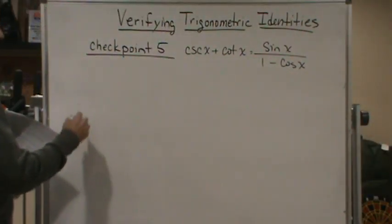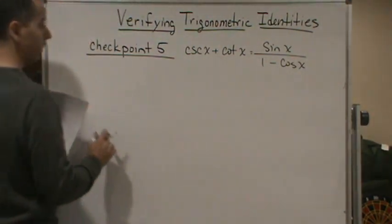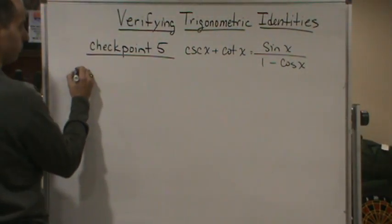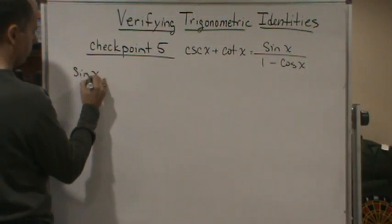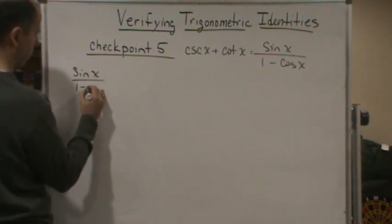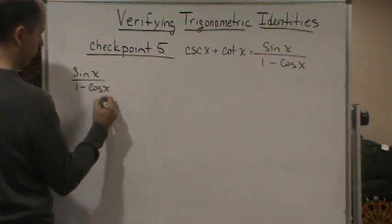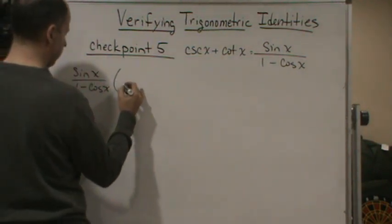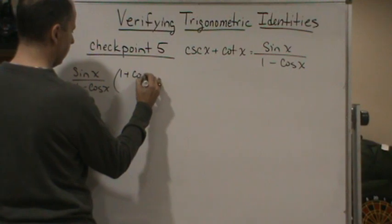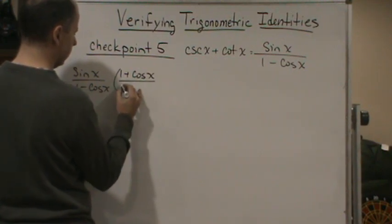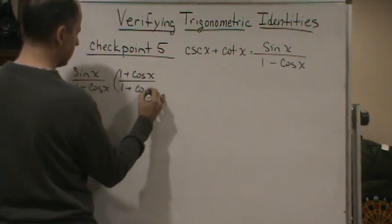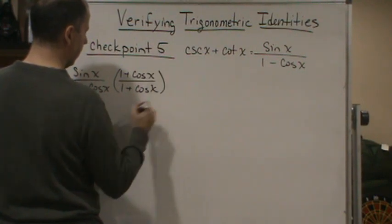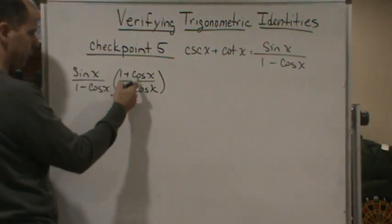Okay, here we go. I'm going to start with the right side. I'm going to multiply the top and bottom by the conjugate, 1 plus cosine x over 1 plus cosine x. Notice that all I'm doing is multiplying by a form of 1.